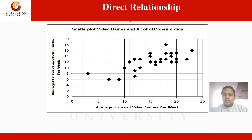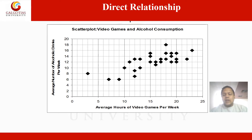In this scatter plot, the vertical axis shows the average number of alcoholic drinks per week, and the horizontal axis shows the average hours of video games per week. You can see there is a positive relationship: as the average hours of video games per week increase, the average number of alcoholic drinks per week also increases. The values of one variable increase as the other increases, moving in an upward direction. We can represent this with the help of the scatter plot diagram.